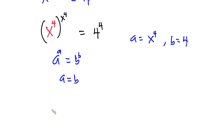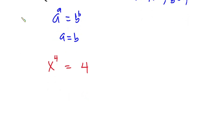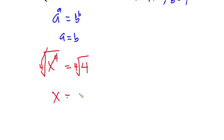This implies that x to the fourth power is equal to 4. Taking the fourth root on both sides of the equation, the fourth power cancels the fourth root, and we have x is equal to plus or minus the square root of 2.